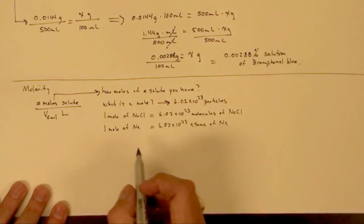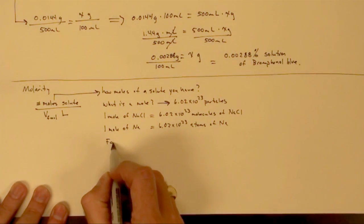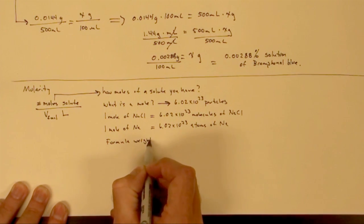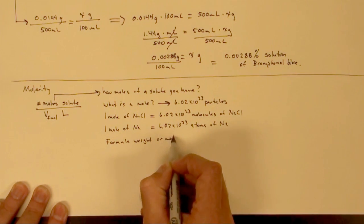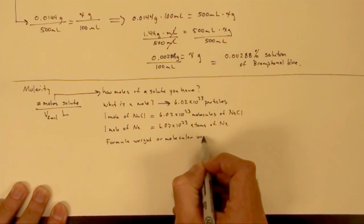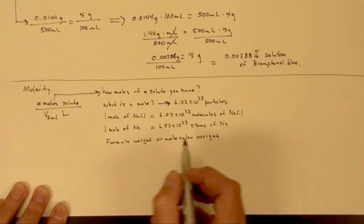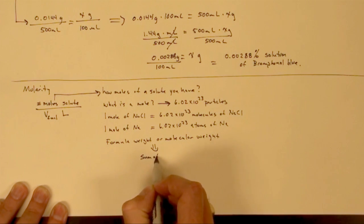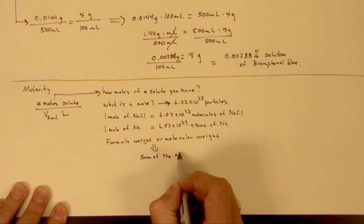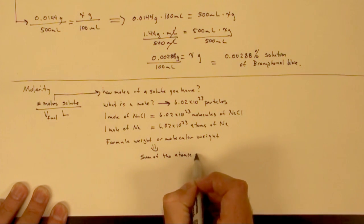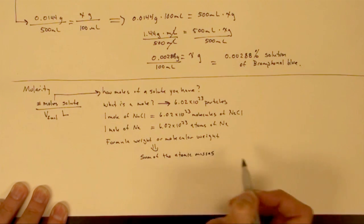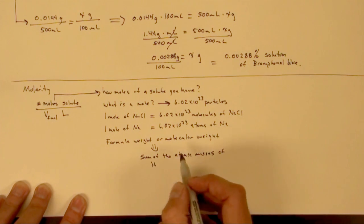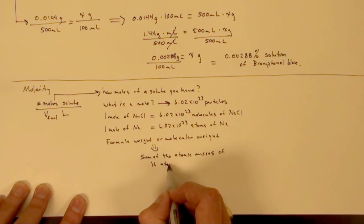So to determine the mole, we figure out the formula weight or molecular weight of the compound. This is the sum of the atomic masses of its constituents, or its atoms.